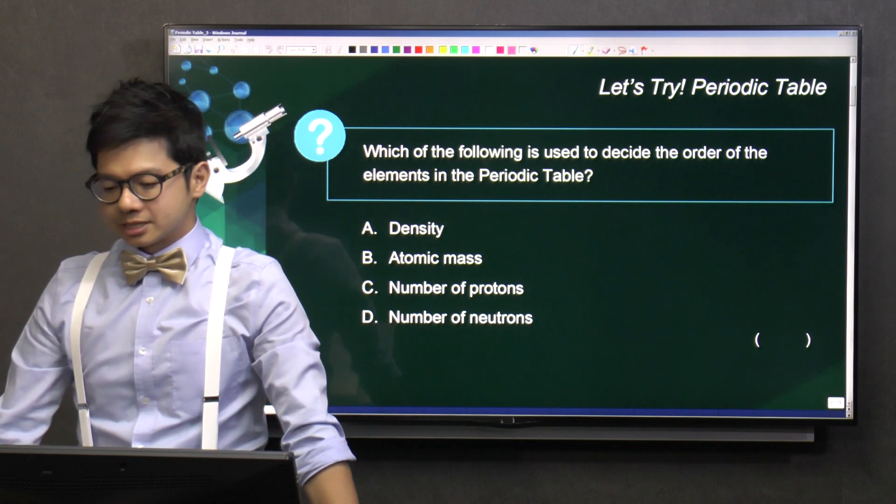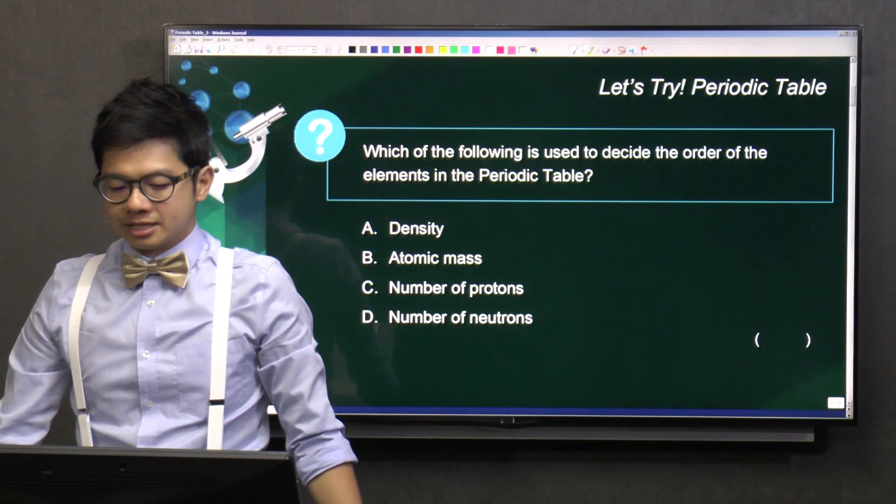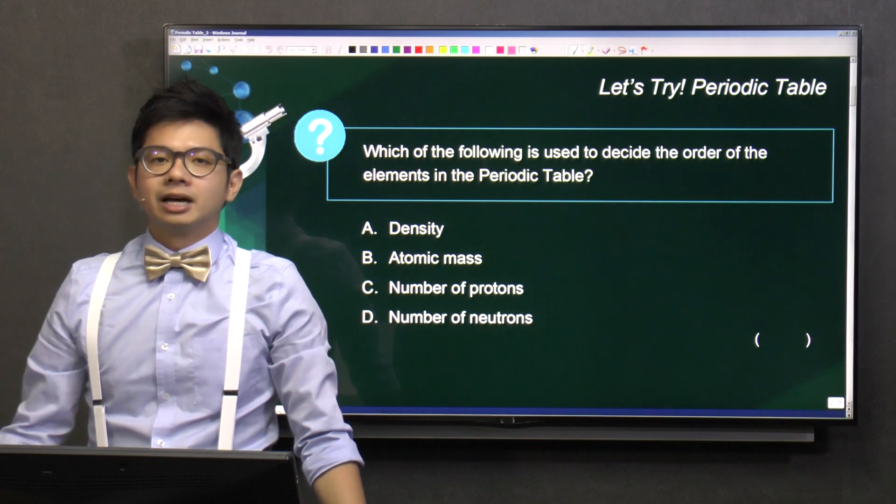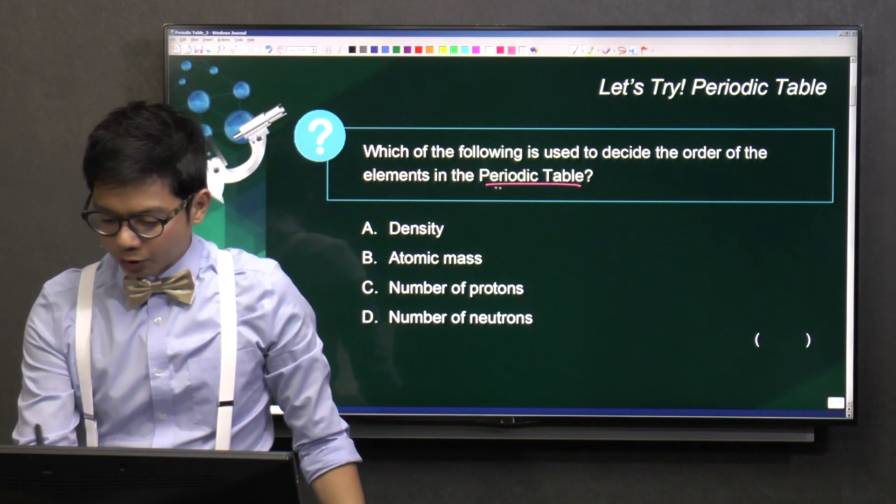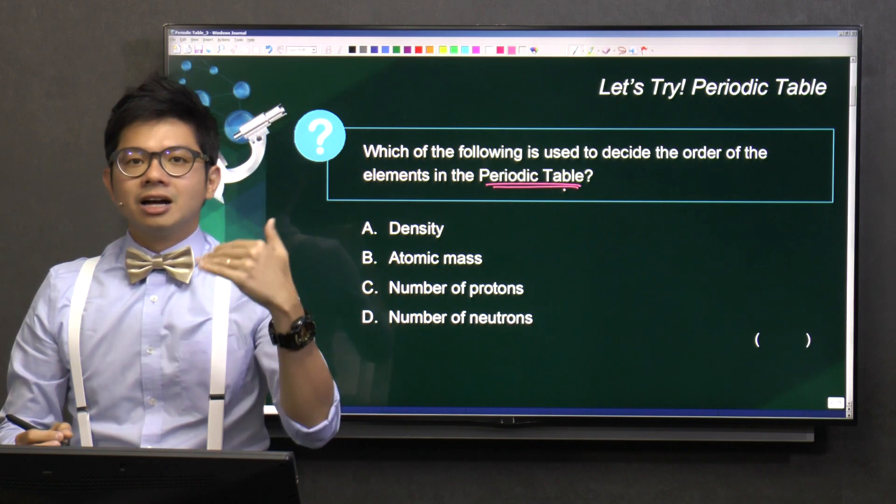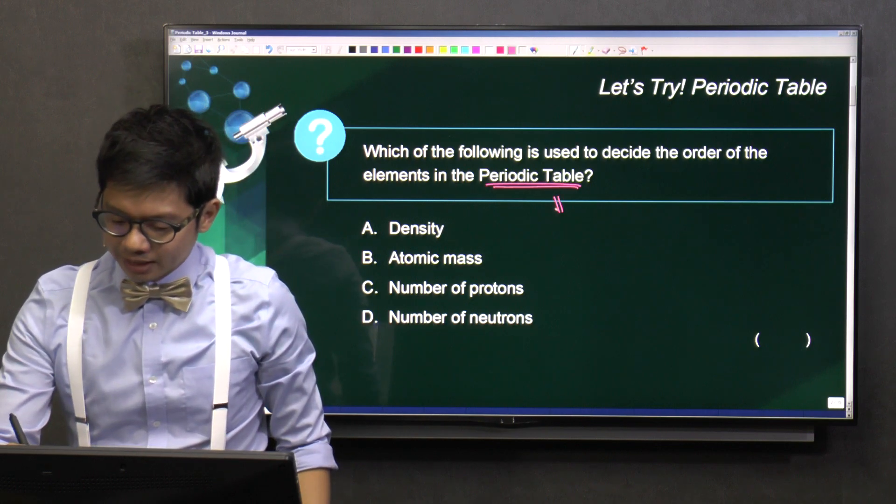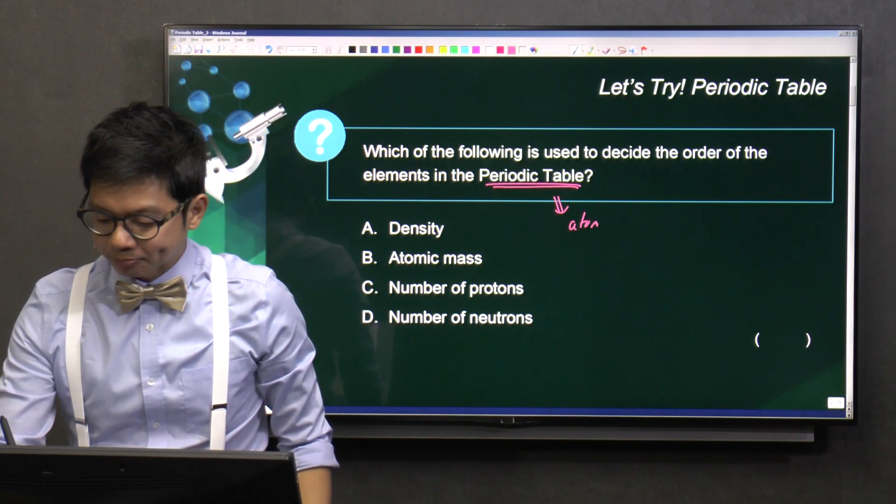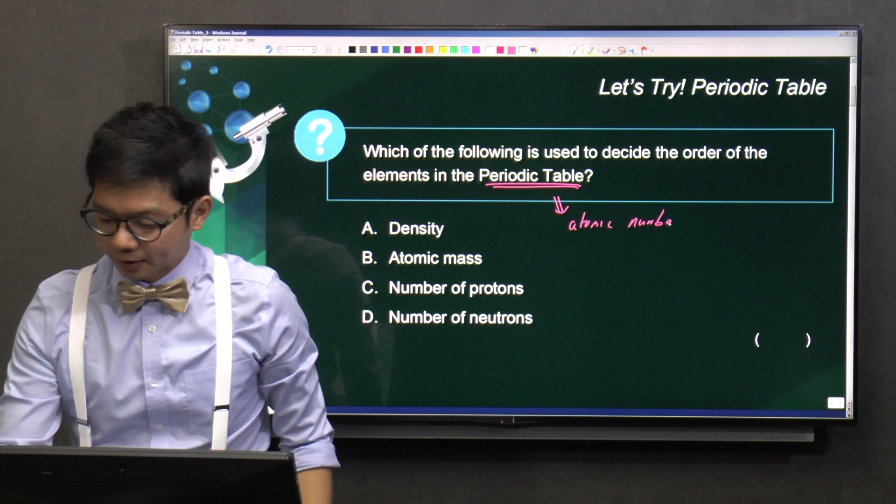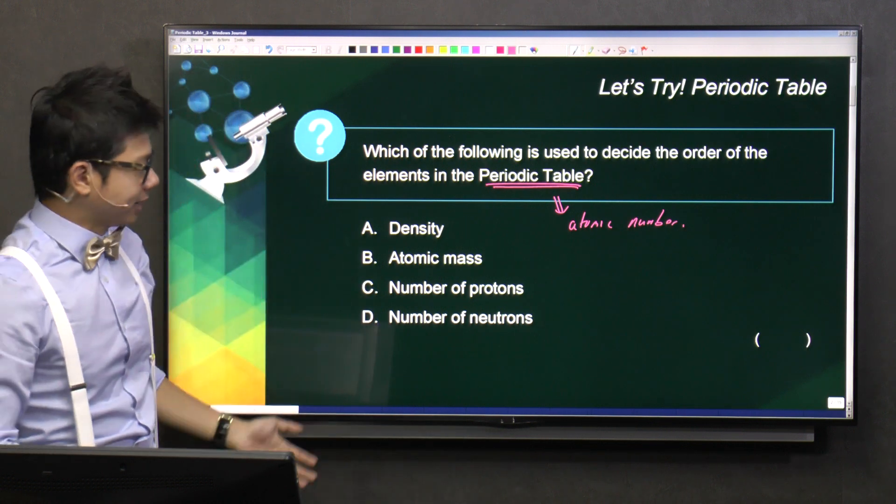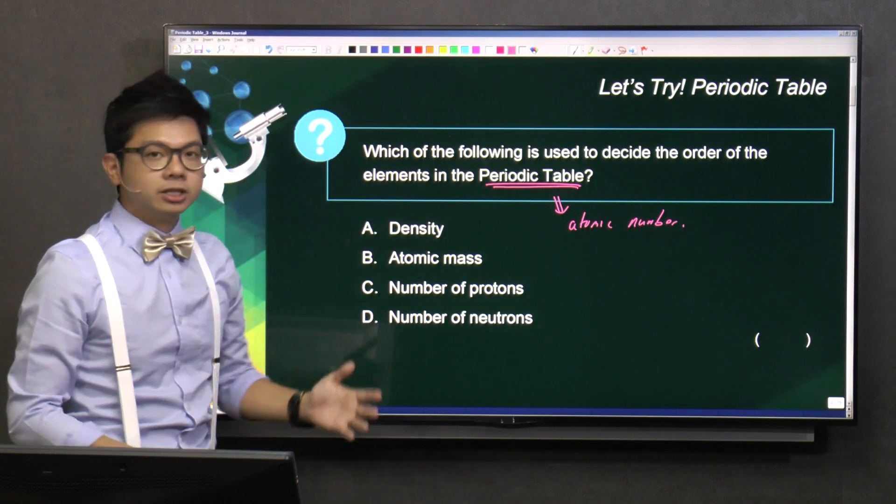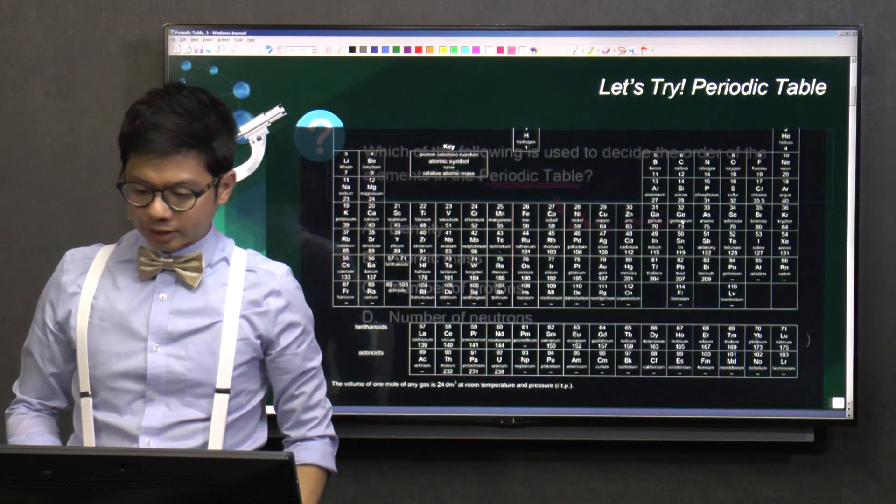Which of the following is used to decide the order of elements in the periodic table? As we all know, the periodic table elements are arranged in terms of their atomic number. But if you look at the options here, you do not find this option, atomic number. So never mind, we look at the periodic table.